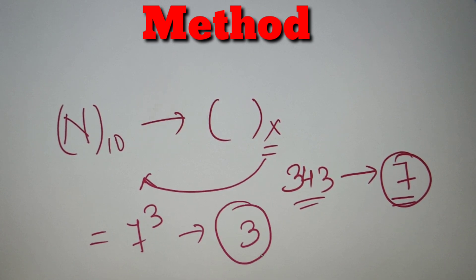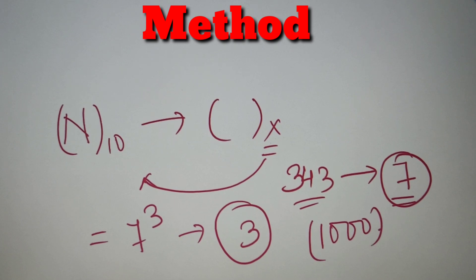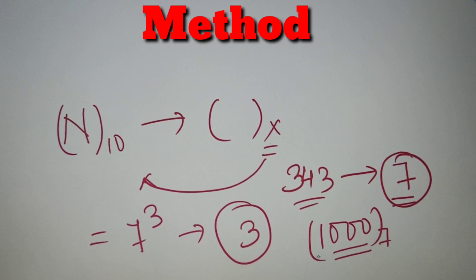You can cross-check this by converting 343 to base 7, and you will see that you get the number 1000 in base 7. You can see that the number of trailing zeros at the end is 3, so our answer is equal to 3.